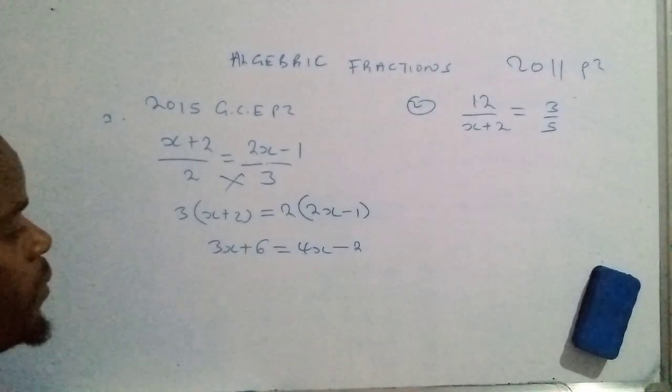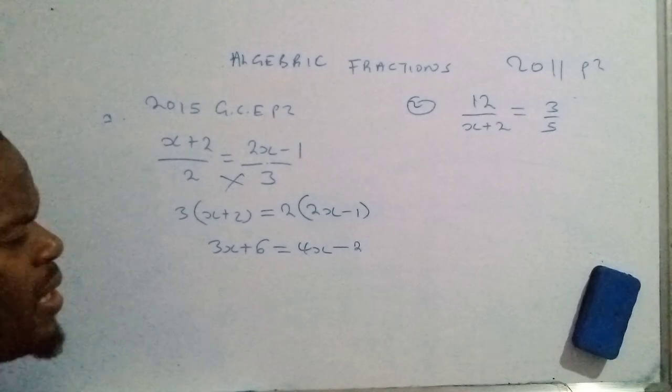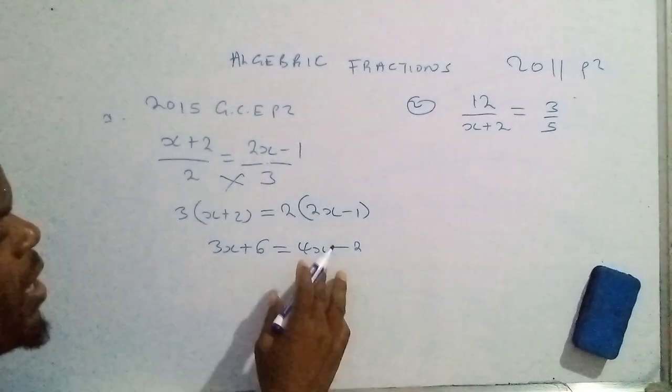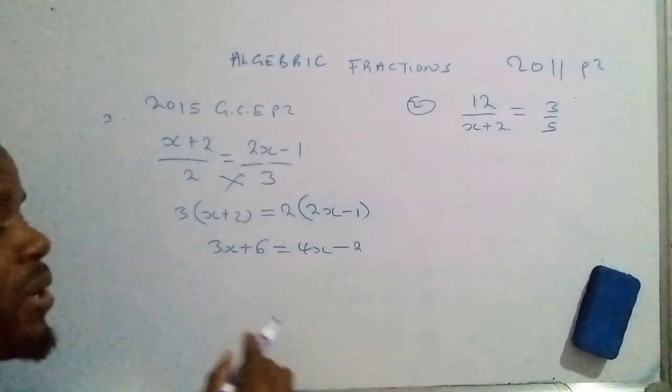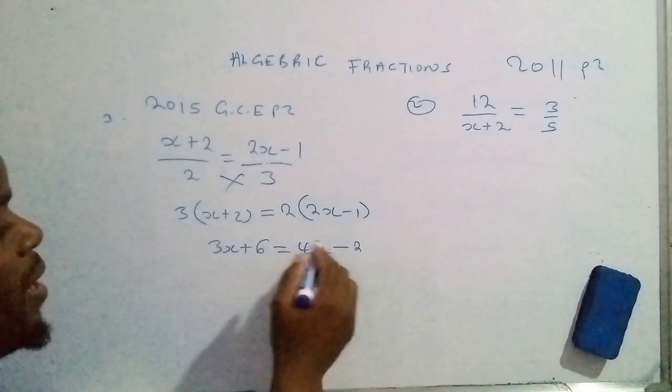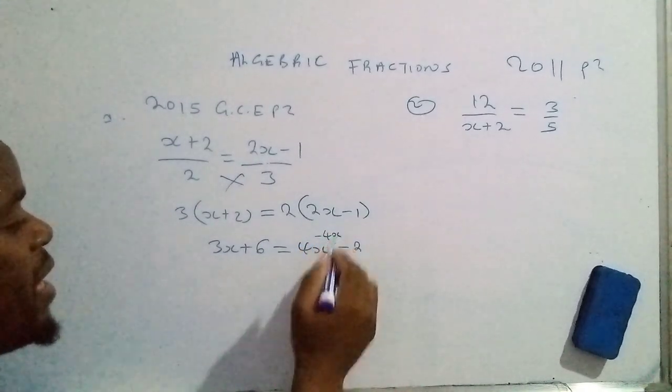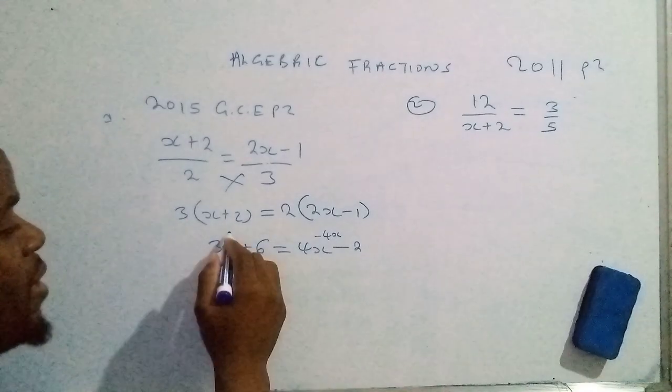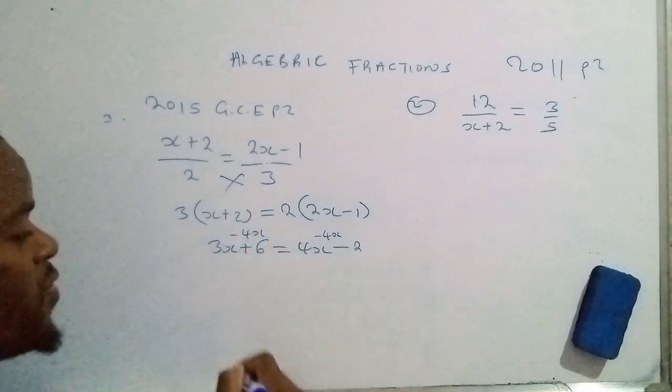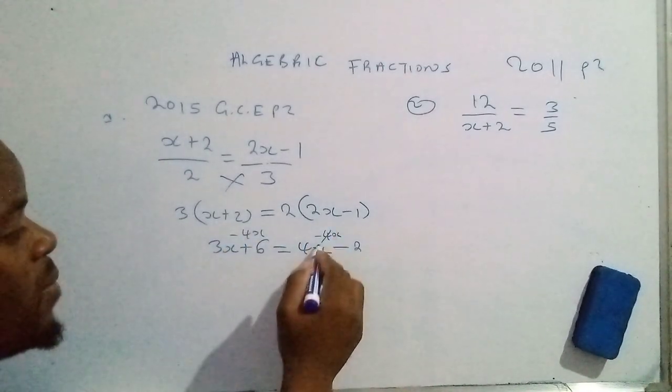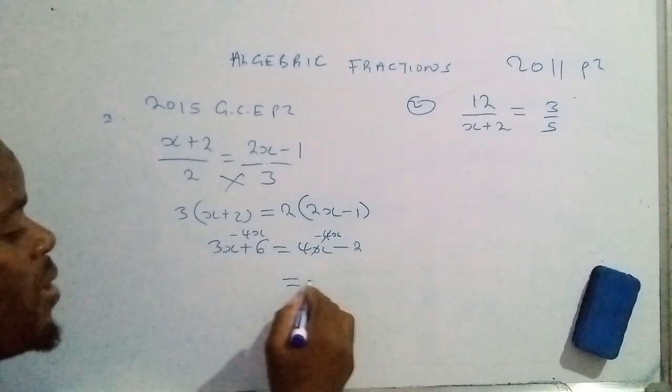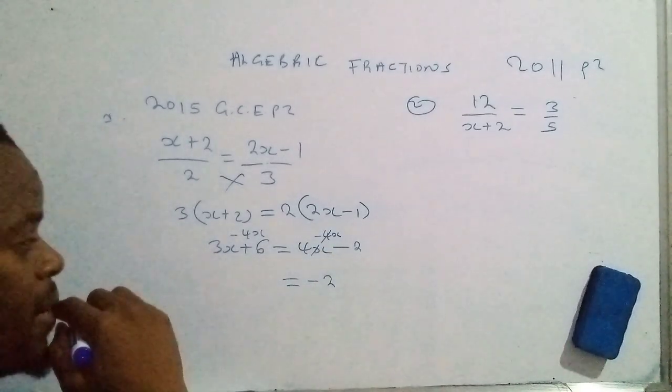So now we can collect the like terms. This 4x is the like term to 3x, so we can move it that side by bringing in the additive inverse of 4x on this side. Minus 4x, so that these will cancel, we're going to have a zero, and what will remain is negative 2.